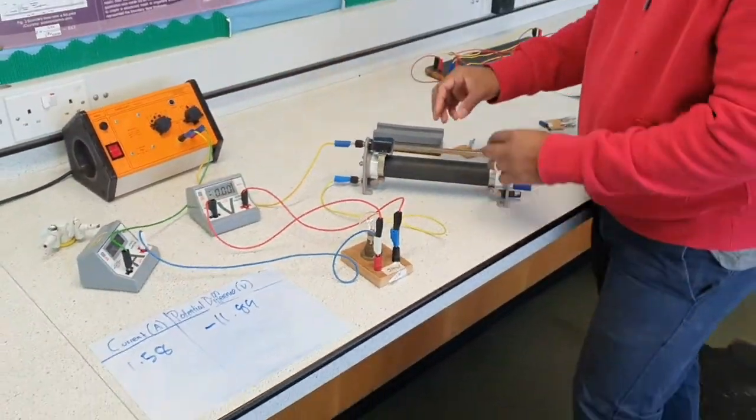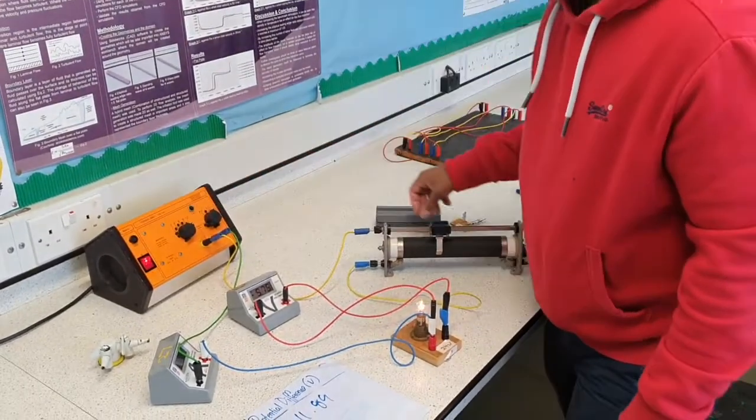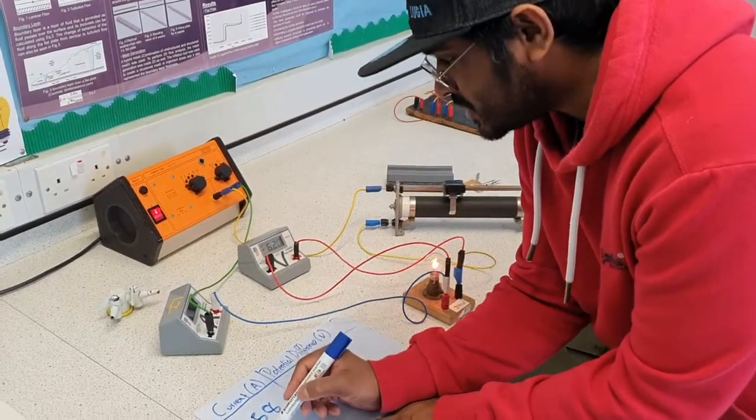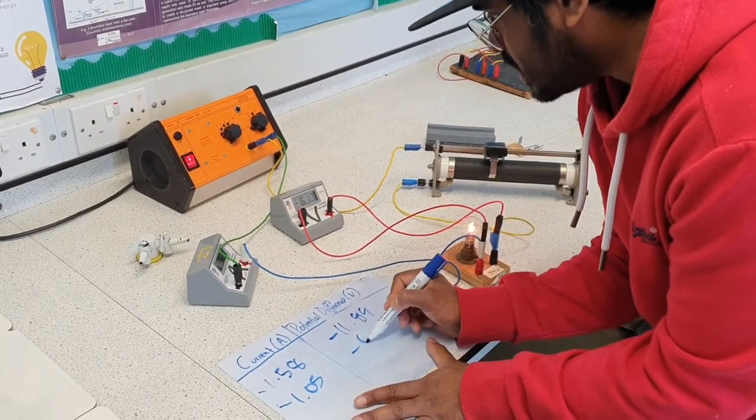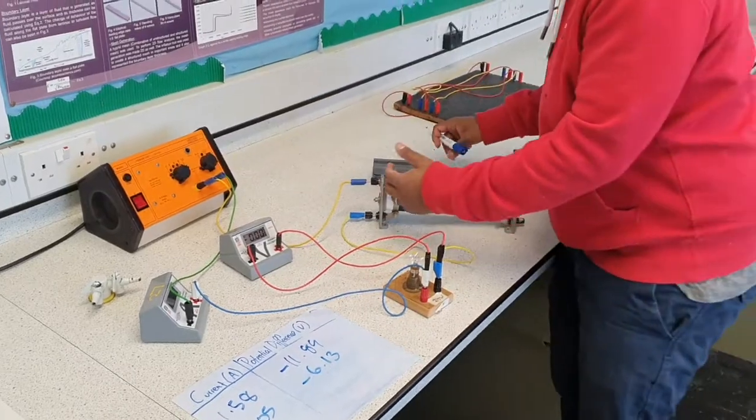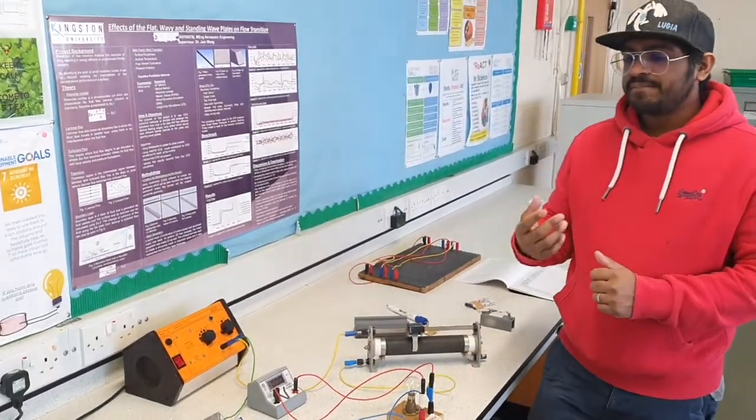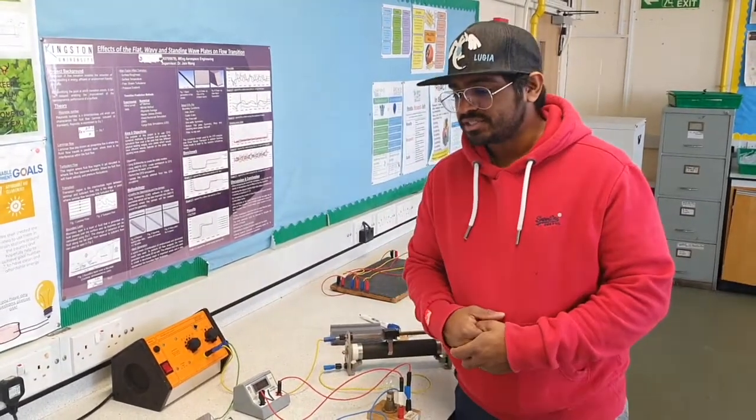And then just switch it off, adjust the variable resistor, switch it on again, and get another set of readings. So minus 1.05 and then minus 6.13. Do this again at different adjustments of the variable resistor to get you lots of results so you can get a nice graph.